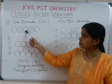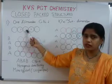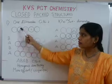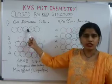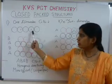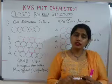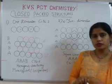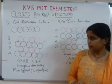Suppose we find this atom's coordination number. How many neighboring spheres are touching this atom? There are two. So coordination number is two in one dimensional cubic close packing.